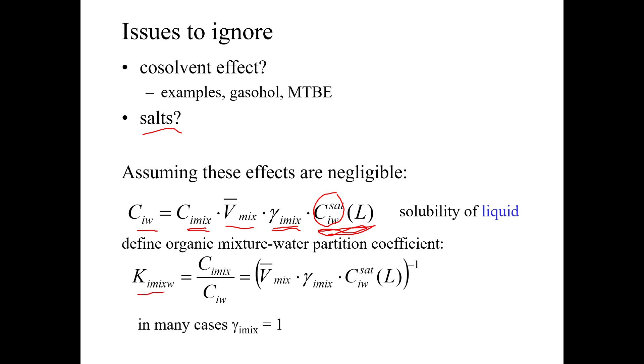So we could define this thing, this equilibrium constant that would be K_mixw, the equilibrium constant for partitioning between the mixture and water. It would be equal to the ratio of those two concentrations. And based on this equation here, we could say that it's roughly equivalent to molar volume of the mixture times the activity coefficient of the chemical in the mixture times the chemical's intrinsic aqueous solubility, and notice the minus 1 power up here.